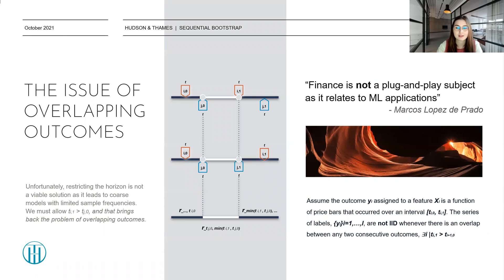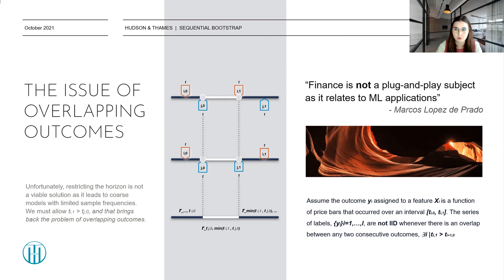Unfortunately, finance is not a plug-and-play subject as it relates to machine learning applications, to quote Professor Di Prado. Amongst other issues, today we're going to be talking about the issue of overlapping outcomes as depicted in the middle of the slide. Assume the outcome Yi is assigned to the feature Xi, and it is a function of price bars that occurred over an interval Ti0 and Ti1. The series of labels, with i's ranging from 1 to I capital denoting the overall number of items in the set, are not independently and identically distributed whenever there is an overlap between any two consecutive outcomes.